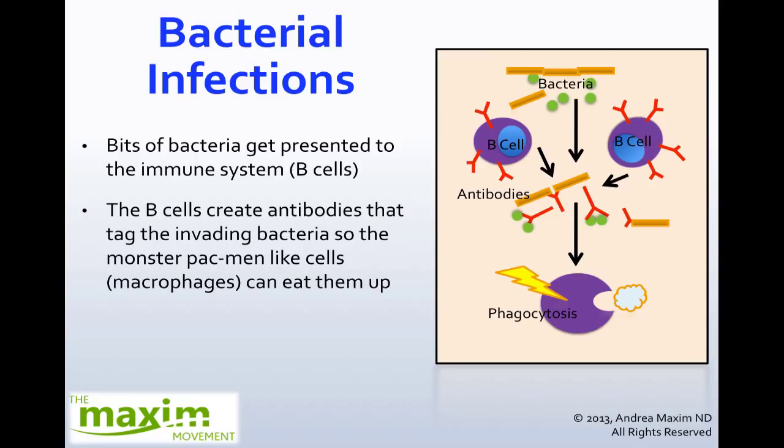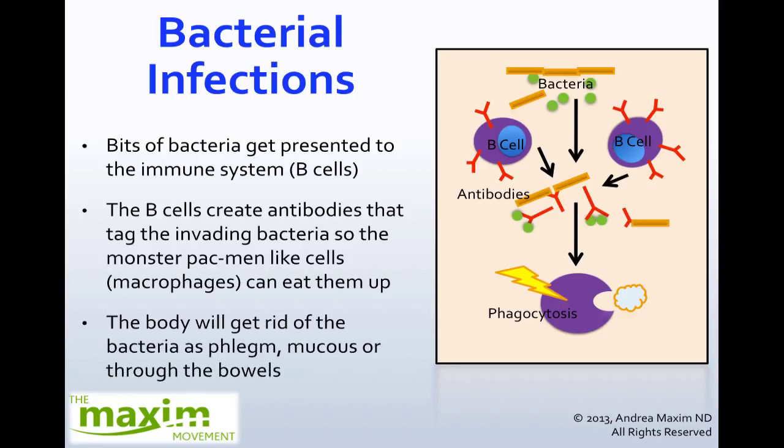They will then deliver them to what we call macrophages, which are kind of like Pac-Man in the body, and they will eat up the antibodies as well as the bits of bacteria. Then they will dispose of them either as phlegm, mucus, or get rid of them through the bowels. So when you're seeing things like pus, when you're creating a lot of phlegm, it could and most likely be a bacterial infection as opposed to a viral.